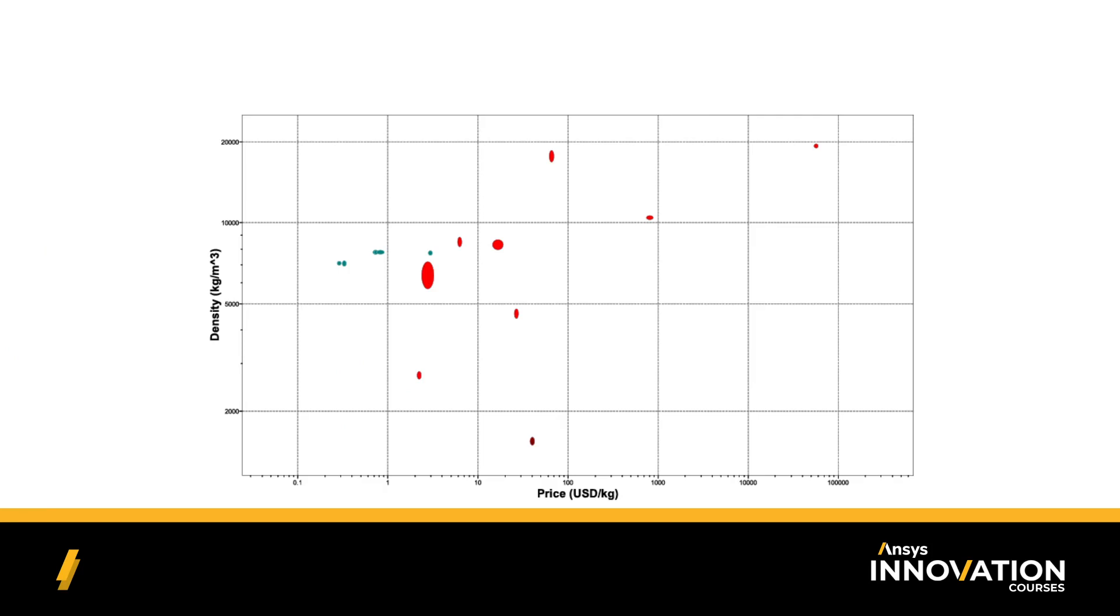Now we start to see something interesting. I want the cheapest and lightest materials, which are located in the bottom left-hand corner of my chart, down here. We can see three materials really stand out from the rest of the group. The cheapest but heaviest materials are cast irons, both ductile and gray. The lightest but most expensive is our carbon fiber composite. And somewhere in the middle are aluminum alloys, which are often used in the aerospace industry.